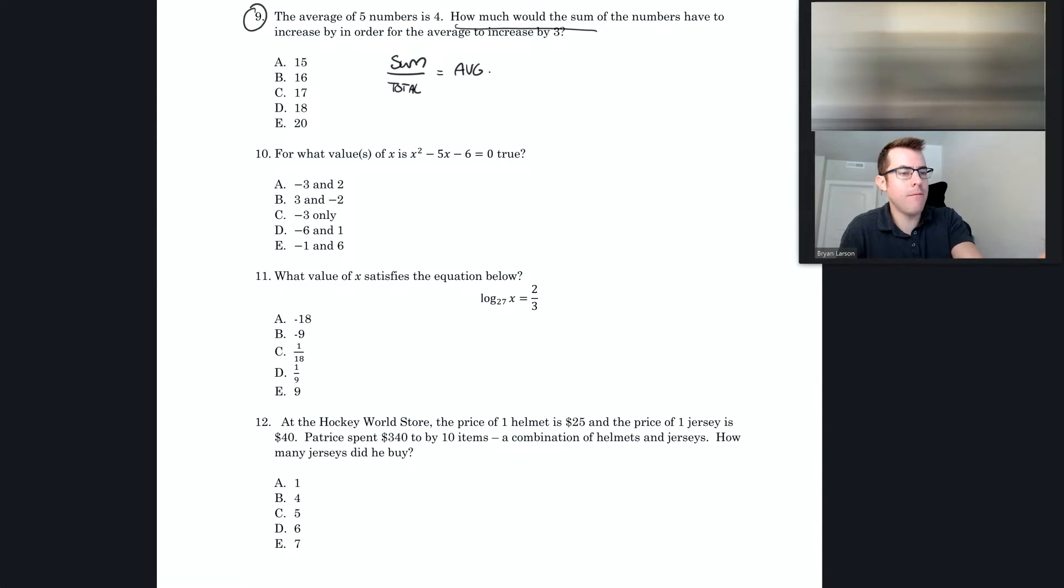Let's fill this in. The average of five numbers, so our total amount of numbers is five, and the average of them is four. So what would the sum have to be? Think what number divided by five gives you four. Twenty. Right, so the sum is 20.